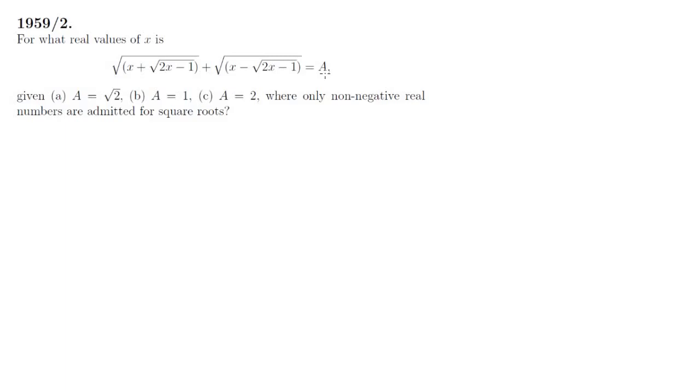We'd like to thank the art of problem solving for getting us started on this proof, which boils down to algebraic manipulation and the taking of cases. Let's begin by setting out our constraint, which is that only non-negative real numbers are admissible for square roots. So 2x minus 1 must be at least 0, which gives us x is greater than or equal to a half.